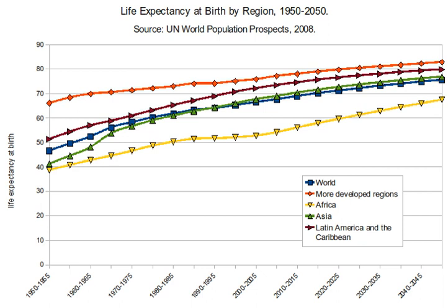Life expectancy was under 25 years in the early colony of Virginia, and in 17th century New England, about 40 percent died before reaching adulthood. During the Industrial Revolution, the life expectancy of children increased dramatically. The under-5 mortality rate in London decreased from 745 in 1730–1749 to 318 in 1810–1829. Public health measures are credited with much of the recent increase in life expectancy. During the 20th century, despite a brief drop due to the 1918 flu pandemic, the average lifespan in the United States increased by more than 30 years, of which 25 years can be attributed to advances in public health.